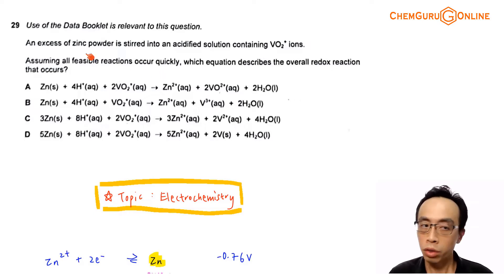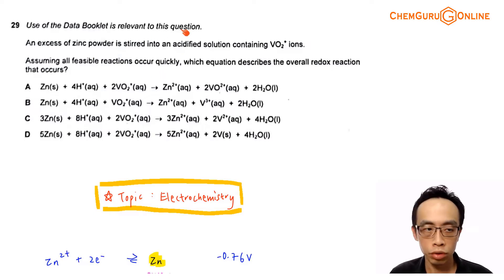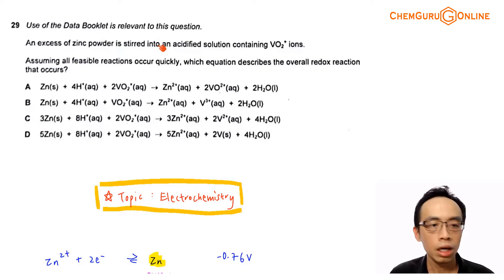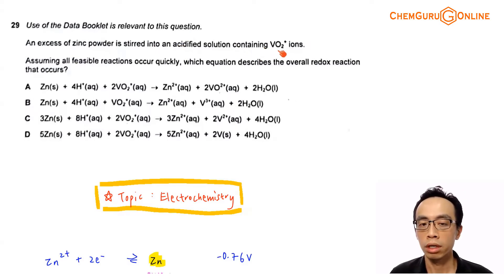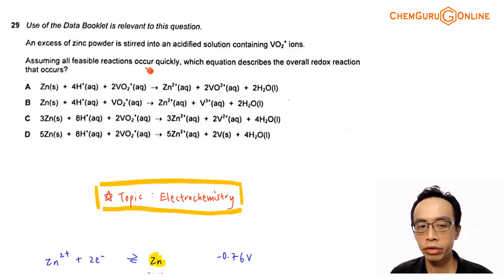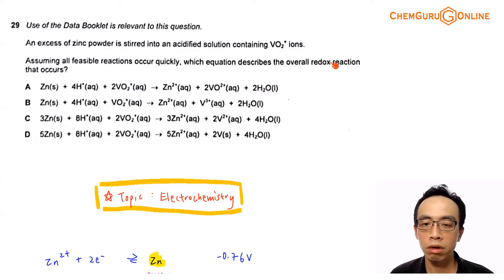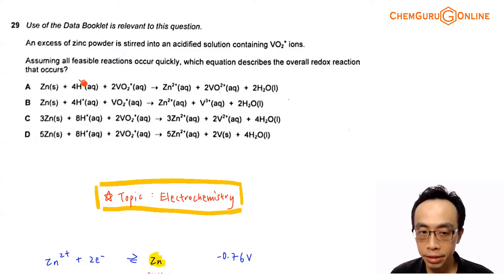Now question 29 — the use of the data booklet is relevant to this question. An excess of zinc powder is stirred into an acidified solution containing VO2+ ions. Assuming all feasible reactions occur quickly, which equation describes the overall redox reaction that occurs?